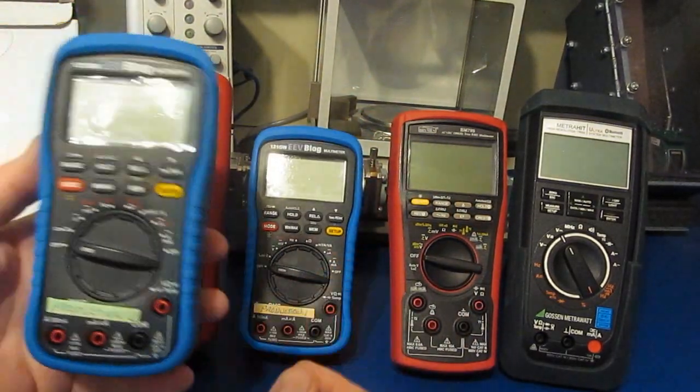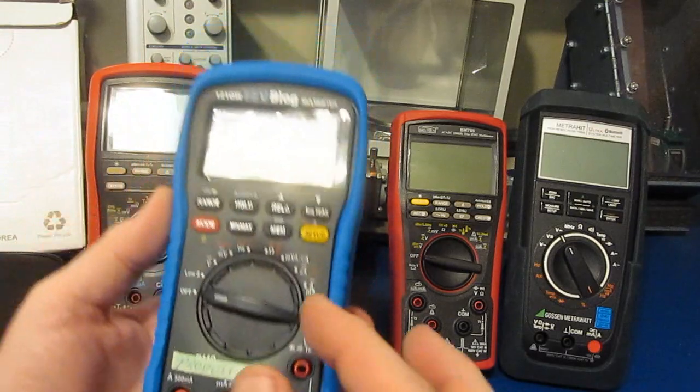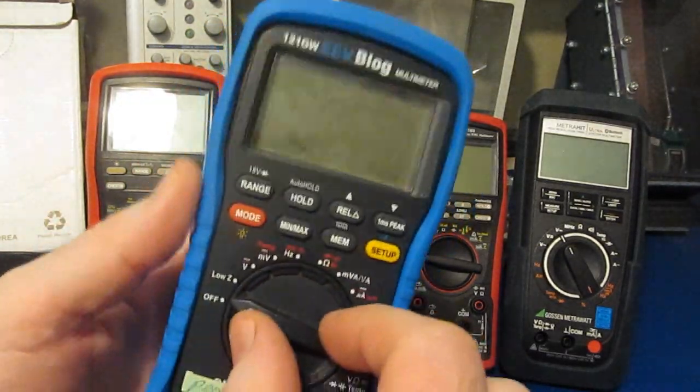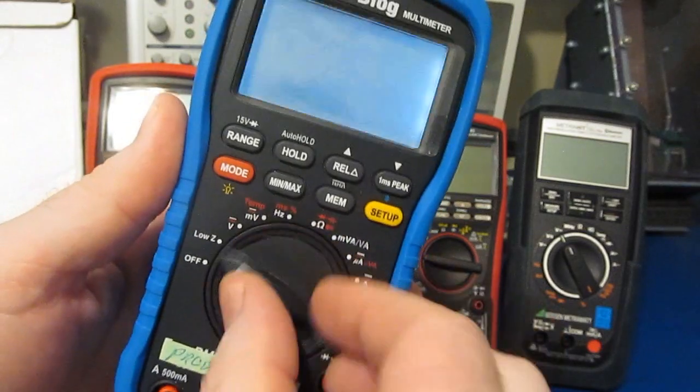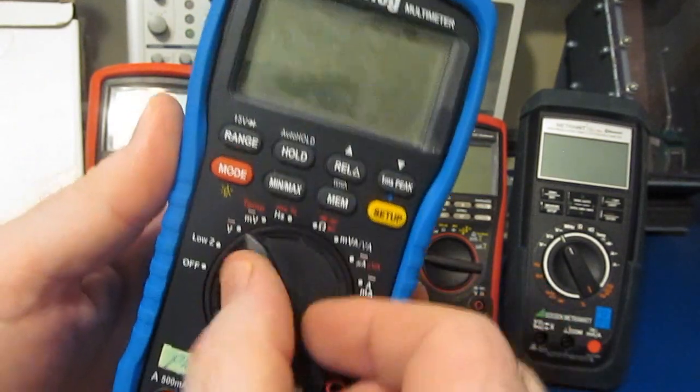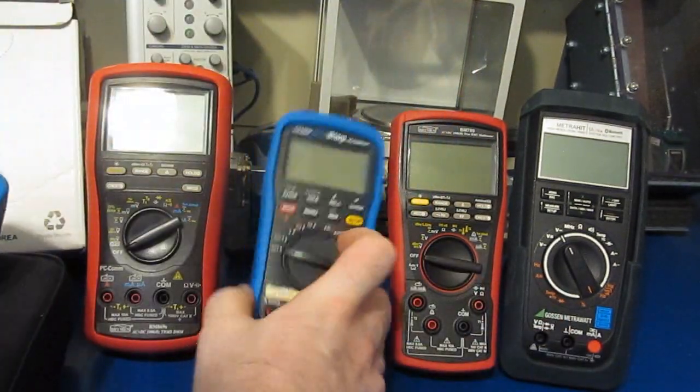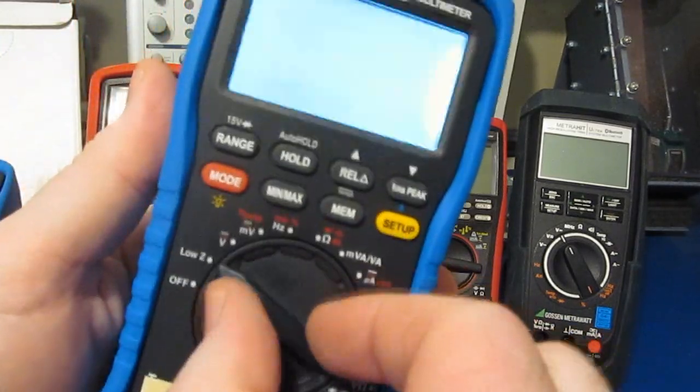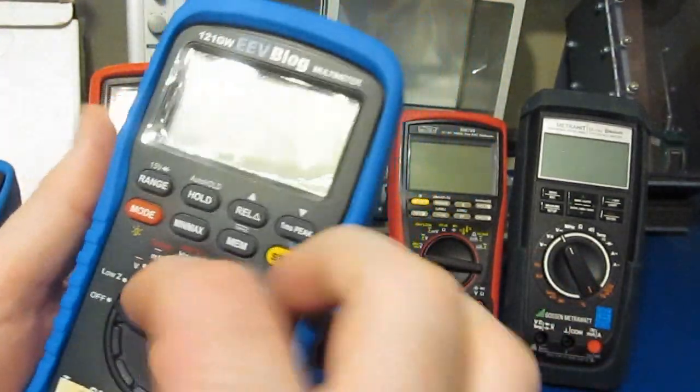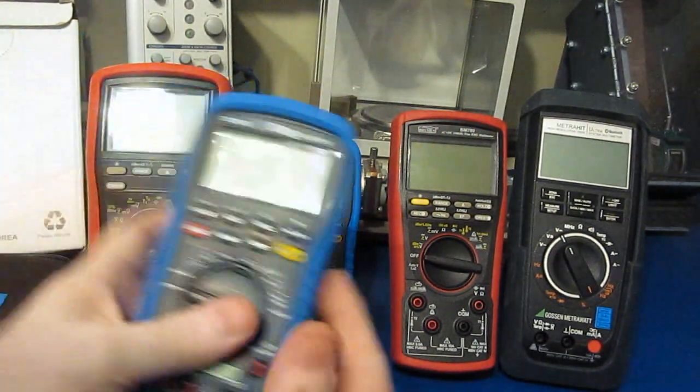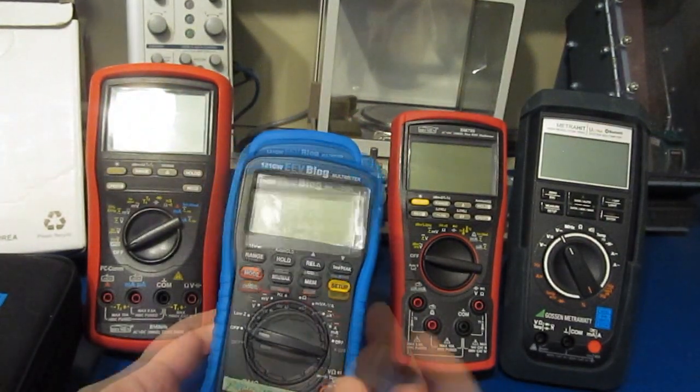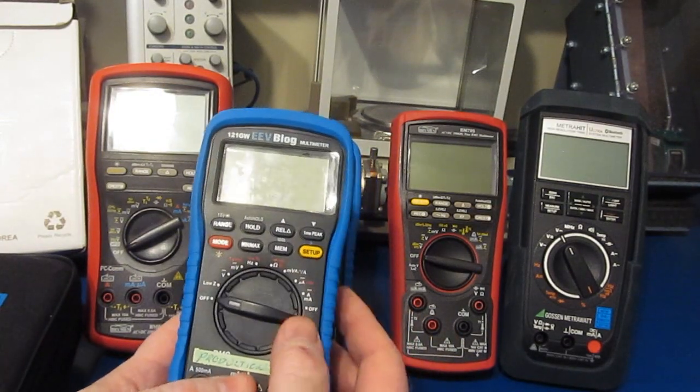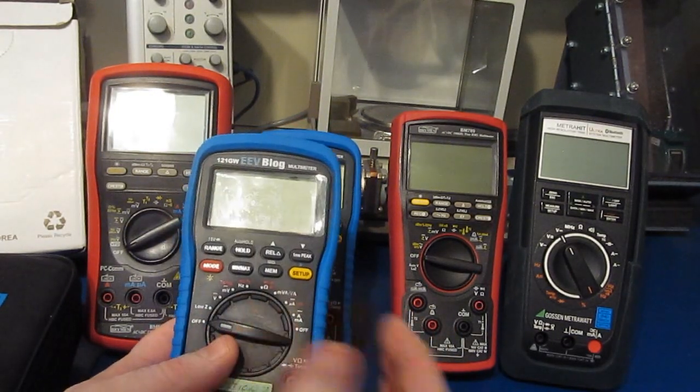You'll notice the meter on the right is production one, the meter on the left is production two. Production one has never been exposed to any kind of testing except functional. Production two is the one that I actually beat the snot out of. You can tell - listen to the switch. See how quiet it is? And compare that with this one.